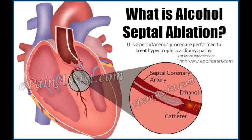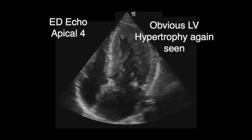Exam tip — HOCM vs. aortic stenosis: both have angina, syncope, and are systolic murmurs. Both increase with amyl nitrate and decrease with hand grip. However, for HOCM, preload-reducing maneuvers (Valsalva, standing) worsen the murmur, whereas they decrease the intensity of most other murmurs including aortic stenosis. Increased LV volume from squatting or leg raise decreases HOCM's murmur, while these maneuvers increase aortic stenosis intensity. No carotid radiation for HOCM.